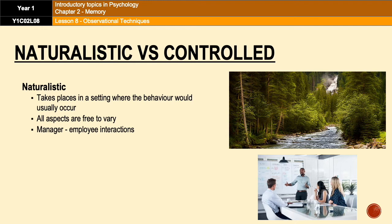A controlled observation is a type of observation where elements are controlled, hence the name. For example, the Strange Situation, which is an attachment piece of research you'll come across in the attachment topic. In the Strange Situation, researchers observe infants playing with their mothers in a controlled, specifically designed playroom. The observers watch via a two-way mirror so they don't get involved, and elements of the situation are controlled, which reduces the impact of unwanted variables.